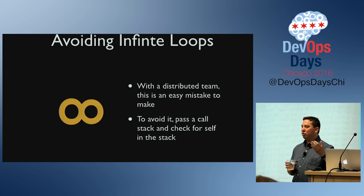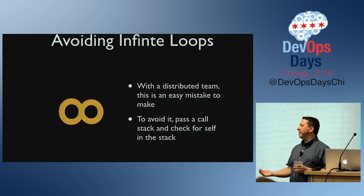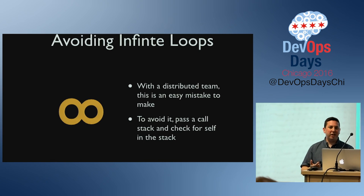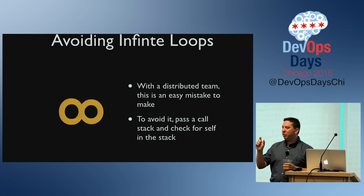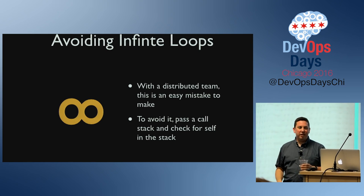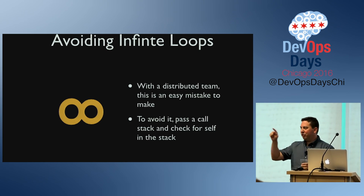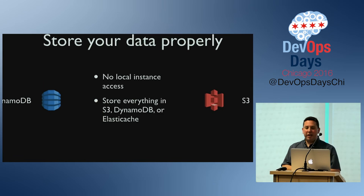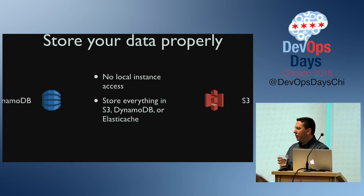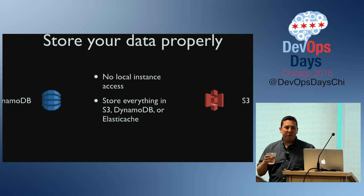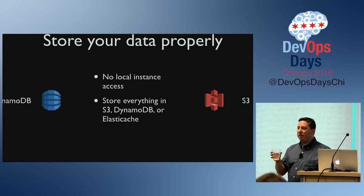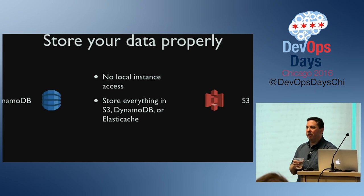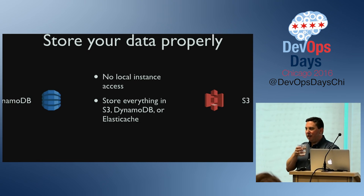The best way we found to avoid infinite loops is to pass the call stack, which is good practice anyway because it really helps with distributed debugging. If every function records that it was called by this function and called that one next, you get a trace of all the functions passed through to get to the data. Also, store your data properly — don't put anything on a local instance because those only last a few seconds. That's actually a nice security benefit: it takes some workload off the person managing the infrastructure because your exposure is lower.